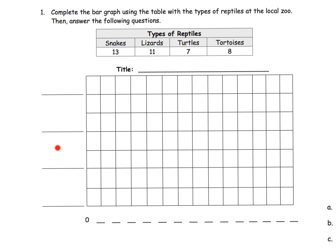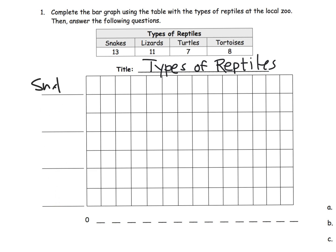So you can see we are being asked to draw a horizontal bar graph. We have our table full of data — there's our title — so that means automatically we know that's going to be the title of our table as well. Types of Reptiles. Since we've got four categories in our table, we're going to need four categories in our bar graph.